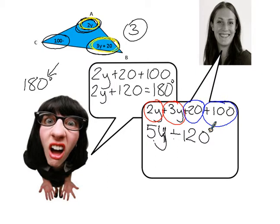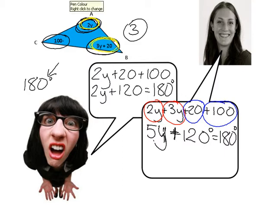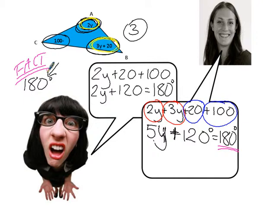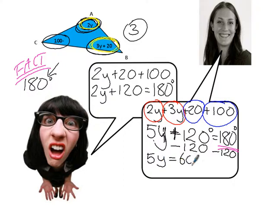Now, you were correct about a triangle having 180 degrees. And what you've actually done there, Gertrude, which is very clever, was to make it into an equation. So we now have 5y plus 120 degrees equals 180 degrees. It must equal 180 degrees because that's one of my triangle facts — the angles in a triangle add up to 180 degrees. Now what I have to do is solve it. So I'm going to take 120 away from both sides.